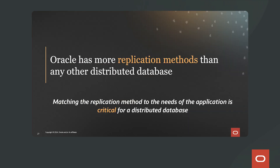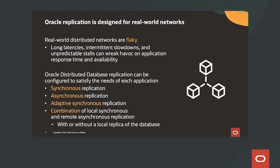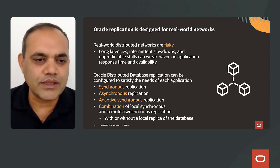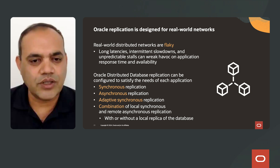Oracle has more replication methods than any other distributed database. Oracle replication is designed for real-world networks, which are flaky — incurring long latencies, intermittent slowdowns, and unpredictable stalls that can wreak havoc on application response time and availability. Oracle distributed database replication can be configured to satisfy the needs of each application — for example, in a synchronous replication manner, asynchronous replication manner, adaptive synchronous replication, or a combination of local synchronous and remote asynchronous replication.